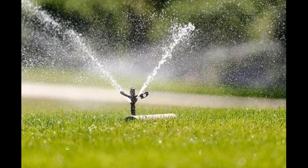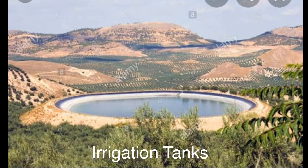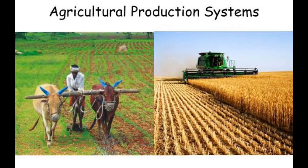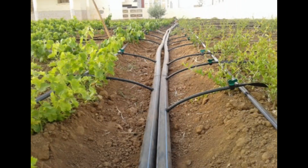Irrigation is the artificial application of water to crops. It is the process of watering agricultural plants through artificial means from wells, tanks, tubewells, canals, etc. It improves agricultural production and is more reliable. Irrigation is required for successive cultivation.